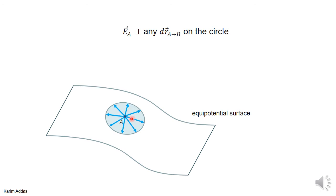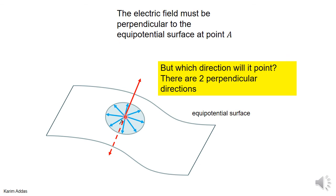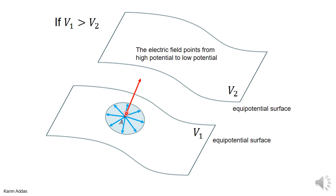Since the electric field must be perpendicular to every vector in the surface, it has to be perpendicular to the surface itself at this point. This means the electric field vector either points perpendicular to the surface upward or downward. If there is a neighboring equipotential surface with potential v2 on one side, and v1 is greater than v2, we can identify the direction: the electric field goes from high potential to low potential, so the electric field vector points from the surface of higher potential toward the surface of lower potential.